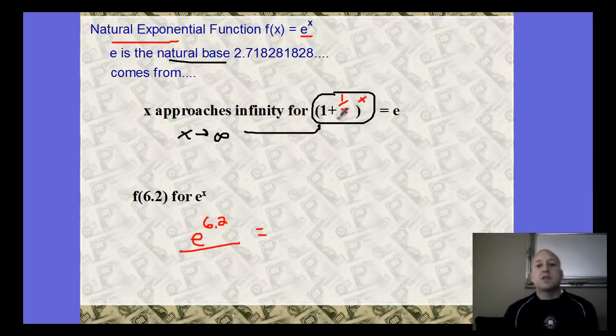The value is as x approaches infinity for this expression, 1 plus 1 over x to the x power. As this x value becomes larger and larger and larger, the number gets closer and closer to e. As you plug infinity in, we cannot put infinity in here, but as we get closer and closer to infinity, the number gets closer and closer to e. So we say this value is equivalent to e then.